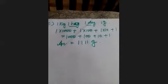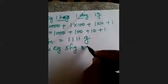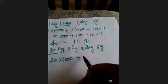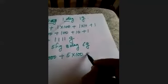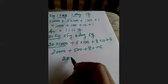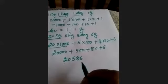Part D: 20 kilogram, 5 hectogram, 8 decagram, and 6 grams. 20 × 1000 + 5 × 100 + 8 × 10 + 6 = 20,000 + 500 + 80 + 6 = 20,586 grams.